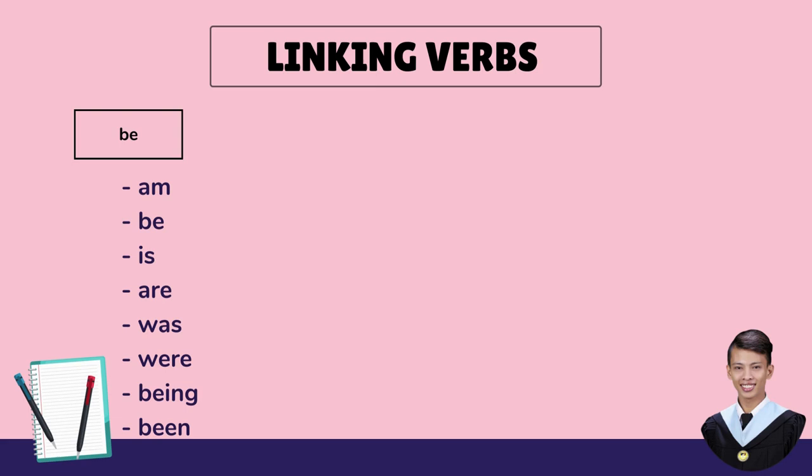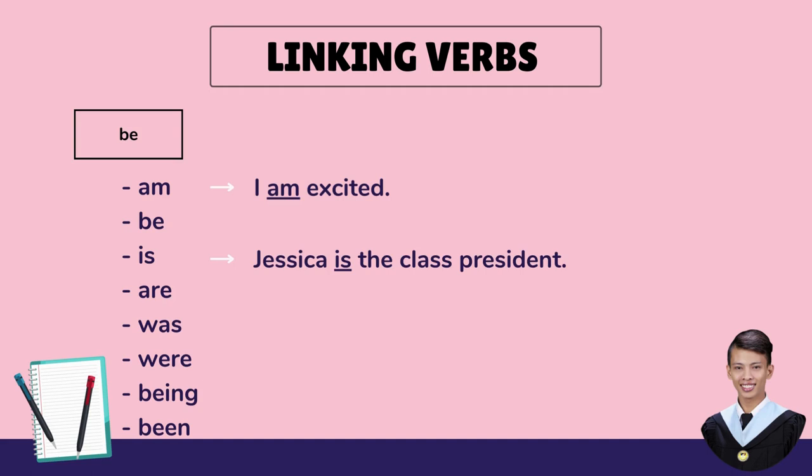Example: I am excited. We use am when we talk about myself, or I. This sentence, I am excited, talks about me. Remember, we use am only when we talk about I. Another example of be verbs: is, if singular, and are, if plural. Jessica is the class president. Jessica is our subject, is is our linking verb, and the class president is our adjective. We cannot just directly say 'Jessica plus president' — that's why we need to add a linking verb, is, to make the sentence correct. Also, we use is because we're only talking about one subject, which is Jessica.